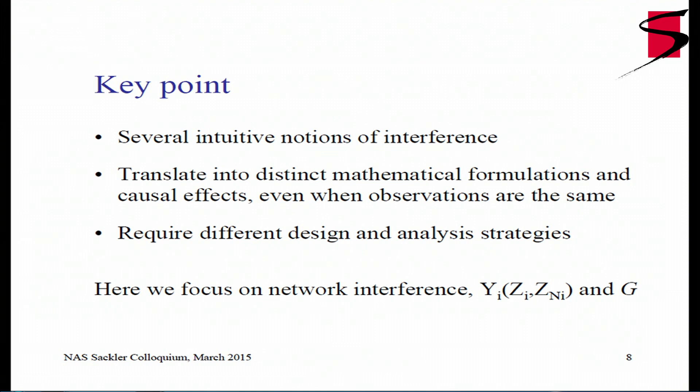The key point is that there are several intuitive notions of interference, but they translate into distinct mathematical formulations and even distinct causal effects — even in a situation where the observations and experiments are the same. It is important to understand which notion you care about and how it translates into a mathematical problem, because all these different formulations require different design and analysis strategies. We don't have a comprehensive understanding of how all the solutions and situations relate, so I'm going to focus on what I refer to as network interference.